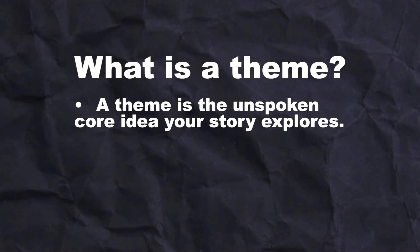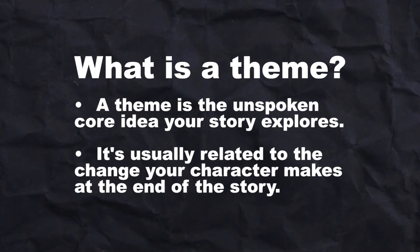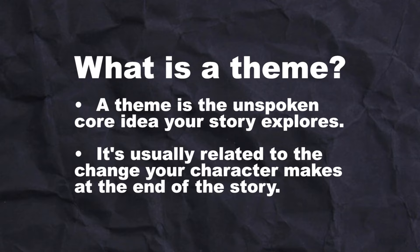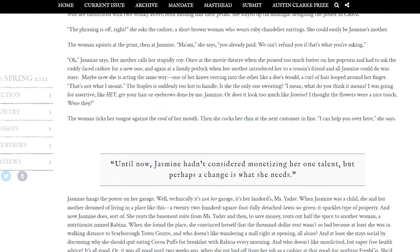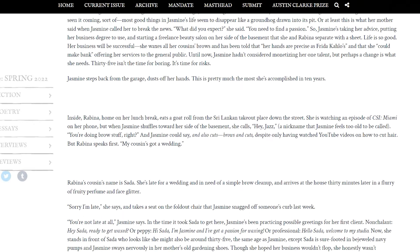This predicament will be linked by your theme. A theme is the unspoken core idea your story explores — it's usually related to the change your character makes at the end of the story. For example, this is from my short story, Jasmine's Brows and Cuts, which you can read for free on the Puritan — I'll link it in the description. If you don't want to read it before continuing this video, here's the logline: an eyebrow waxer questions her ideology on beauty standards when a bold woman named Sada becomes the first client of her at-home salon.